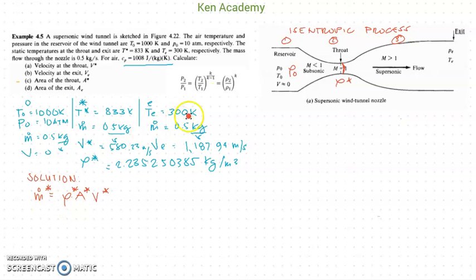Luckily, the mass flow rate throughout the nozzle or the wind tunnel nozzle is just the same, which is 0.5 kilograms per second. The velocity we have already solved for, which is 580.23 meters per second. And the density is what we solved for in the last video. So, let's just try to simplify the equation so that we will be able to solve for the area at the throat.